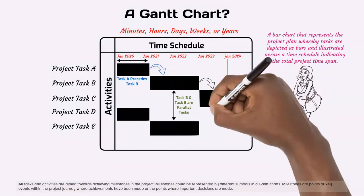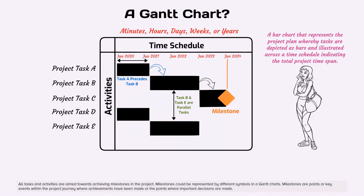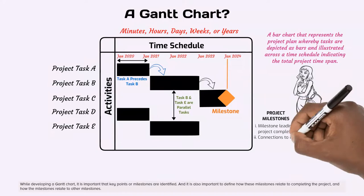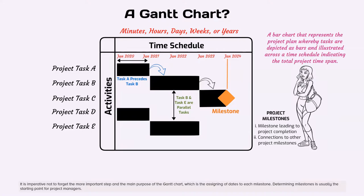Milestones could be represented by different symbols in a Gantt chart. Milestones are points or key events within the project journey where achievements have been made or the points where important decisions are made. While developing a Gantt chart, it is important that key points or milestones are identified. And it is also important to define how these milestones relate to completing the project, and how the milestones relate to other milestones.